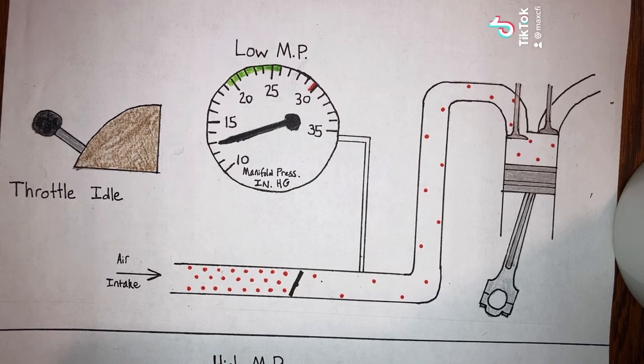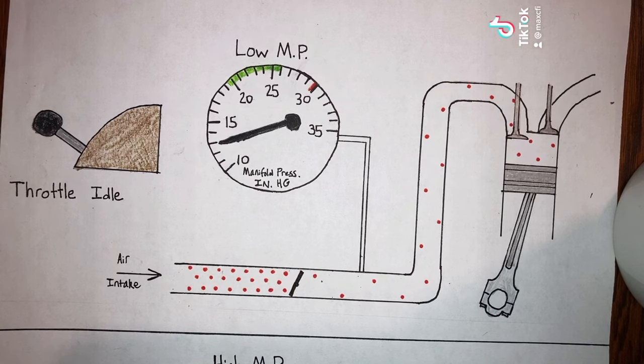In airplanes with fixed-pitch propellers, manifold pressure and RPMs rise and fall together as the throttle is opened and closed. So most airplanes are just equipped with a tachometer to measure engine RPMs.